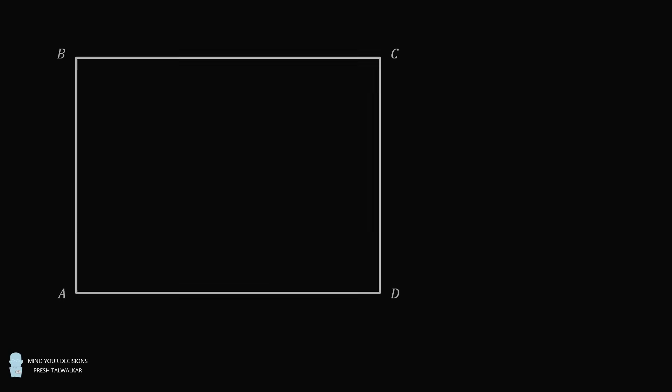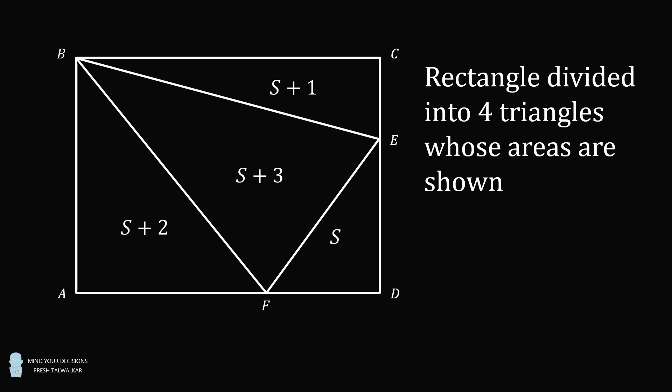Hey, this is Presh Talwalkar. Start with rectangle ABCD. Construct triangle BEF with E along CD and F along AD. Now let's label the four areas of these triangles. Suppose that DEF has an area of S, BCE has an area of S plus 1, ABF has an area of S plus 2, and BEF has an area of S plus 3. So we have a rectangle divided into four triangles whose areas are shown. What is the value of S?